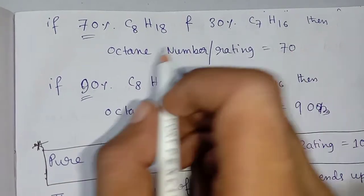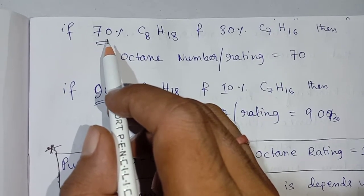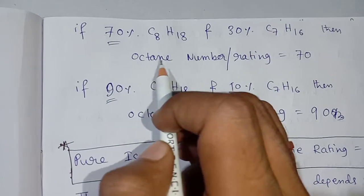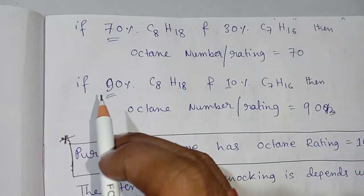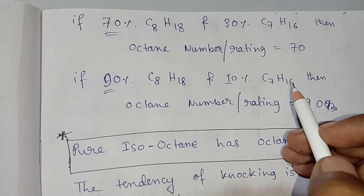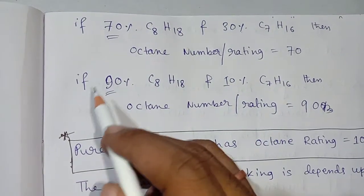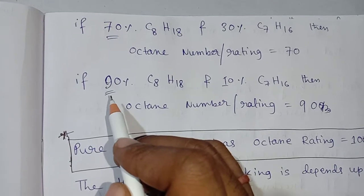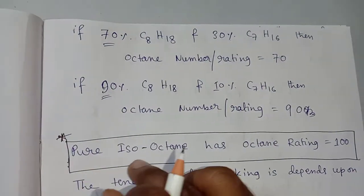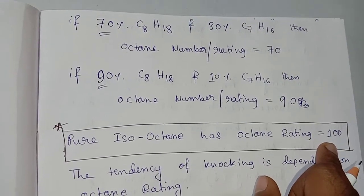If the mixture is changed to 70% isooctane and 30% normal heptane, the octane number will be 70, because isooctane is 70 ml out of 100 ml total. Similarly, if the mixture is 90% isooctane and 10% normal heptane, then octane number is 90. For pure isooctane, the octane rating is 100, meaning there is no normal heptane present.